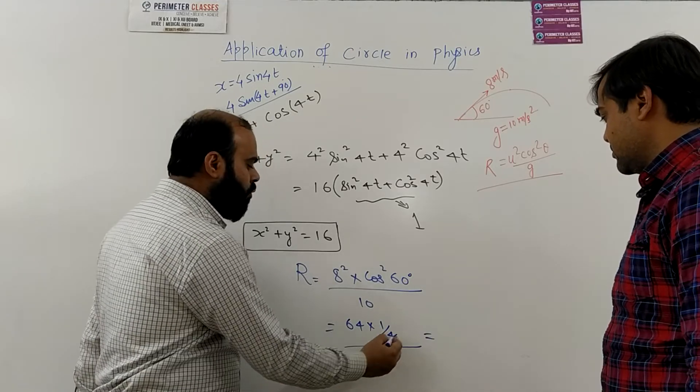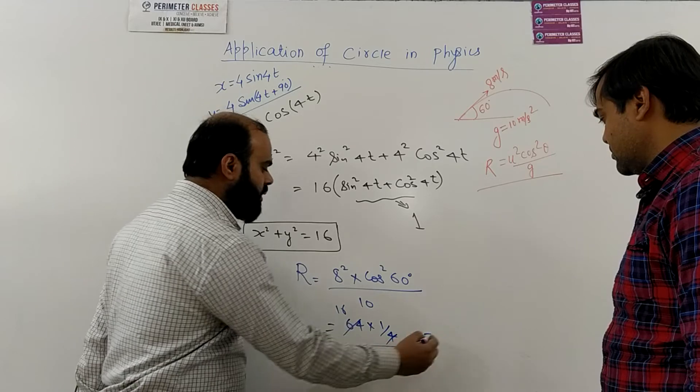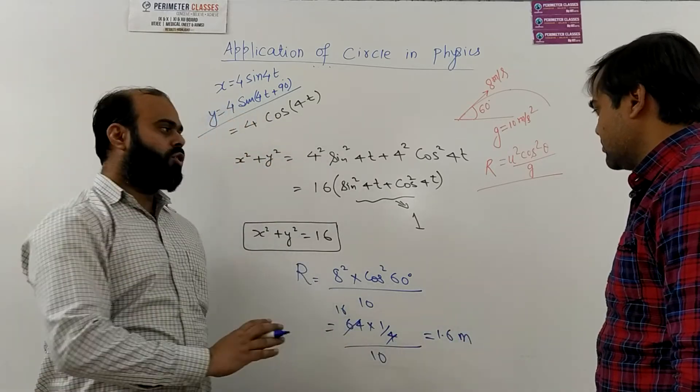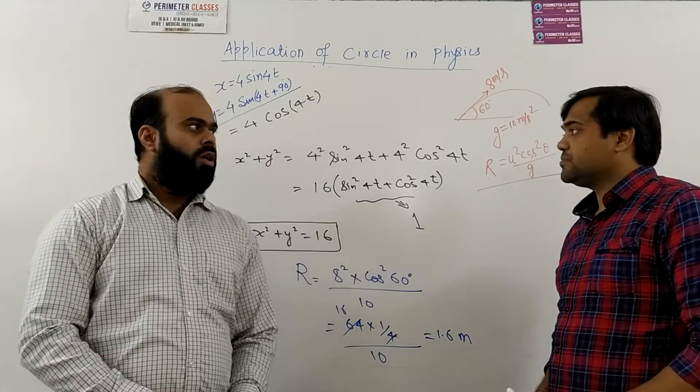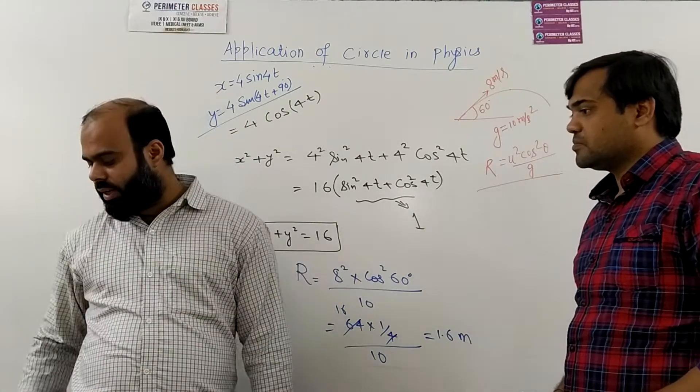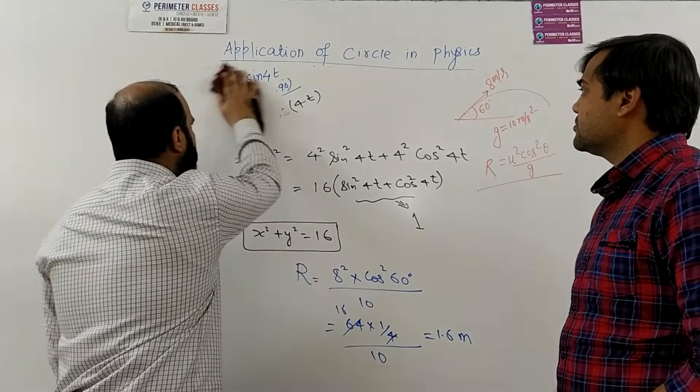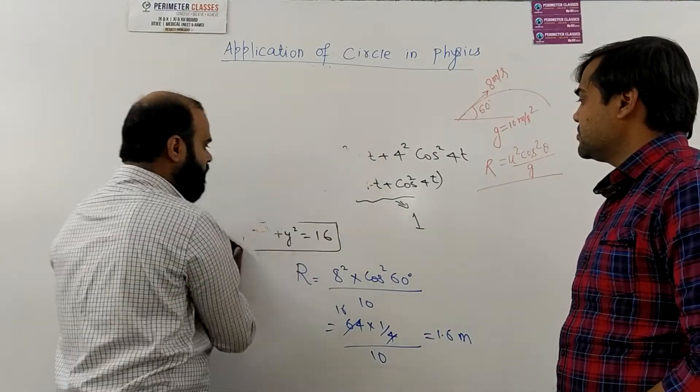So finally 4, 16, 64 and this is 1.6 meter which is the radius of curvature at the topmost position. So these were the answers of the questions which were given in the previous video.